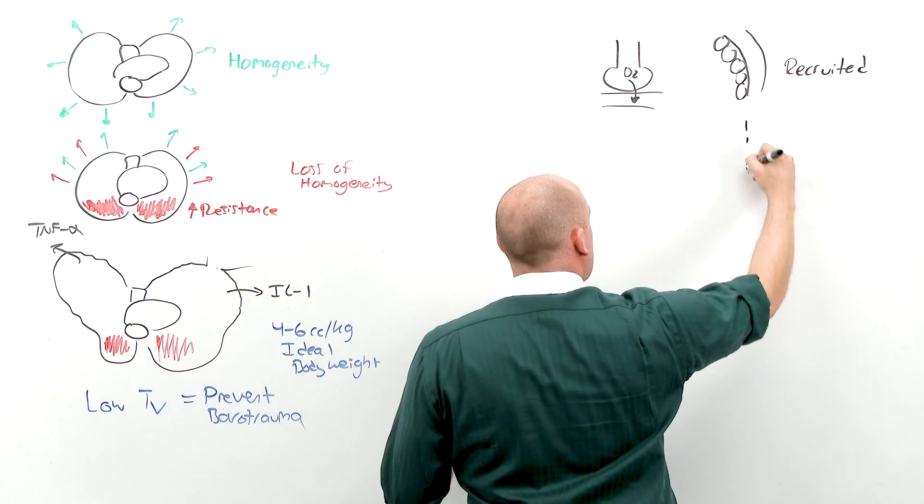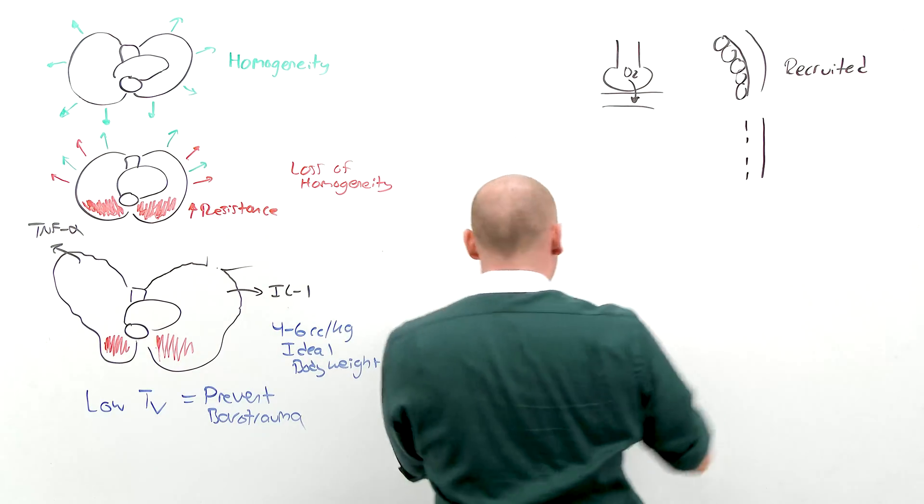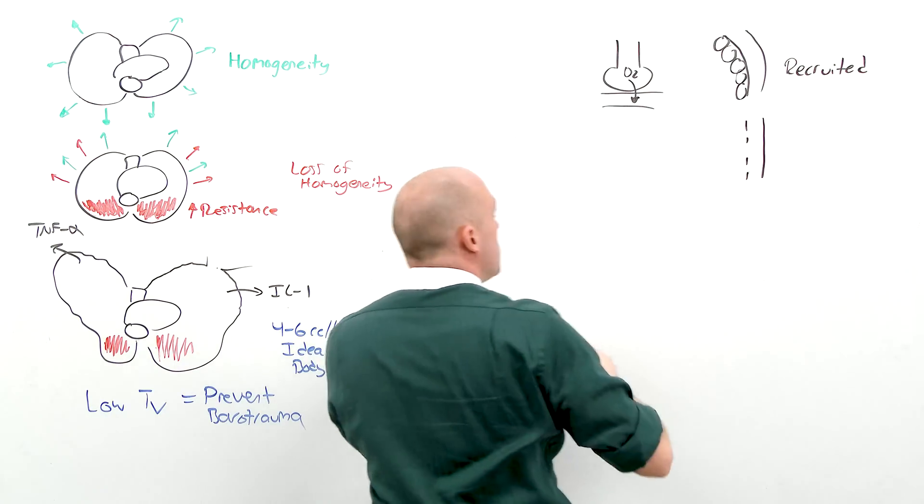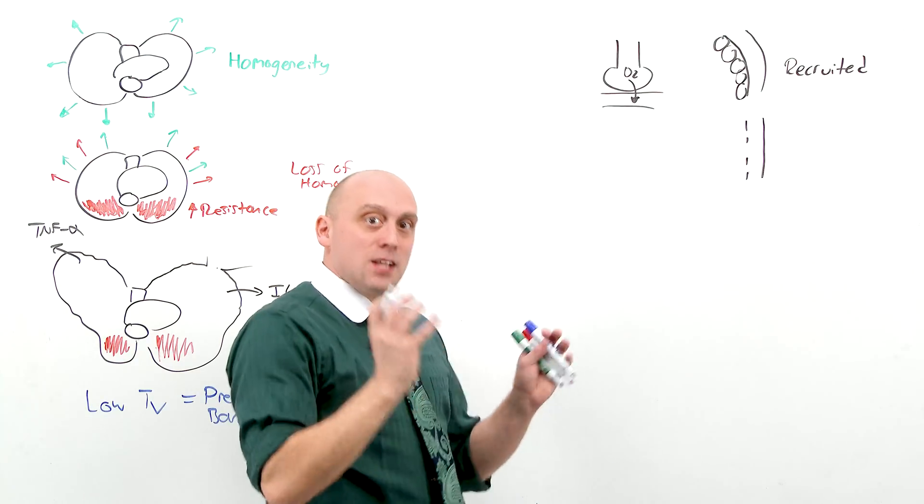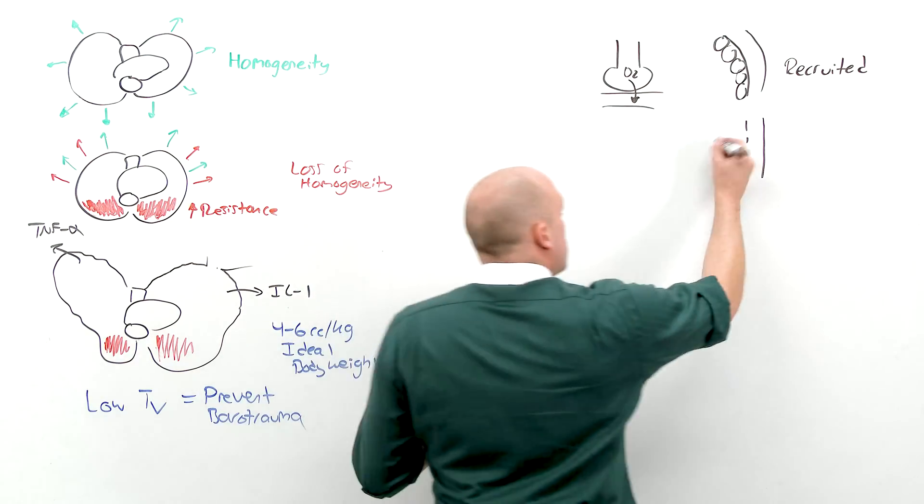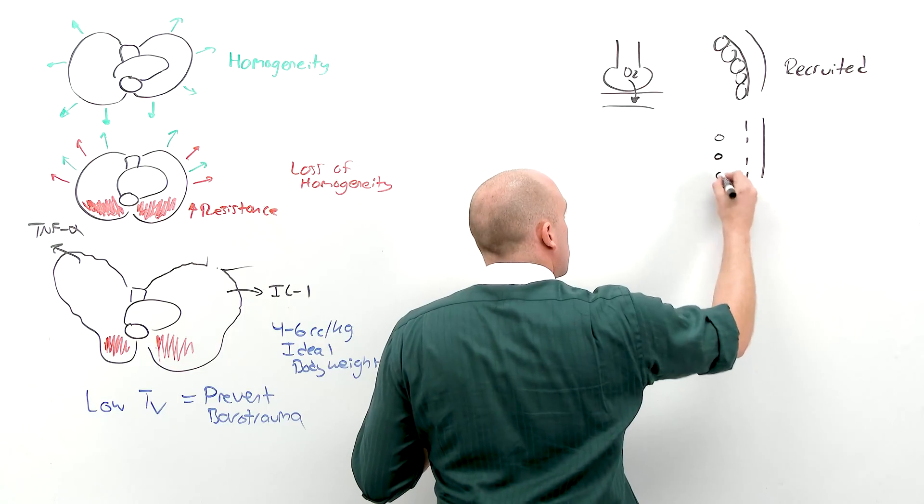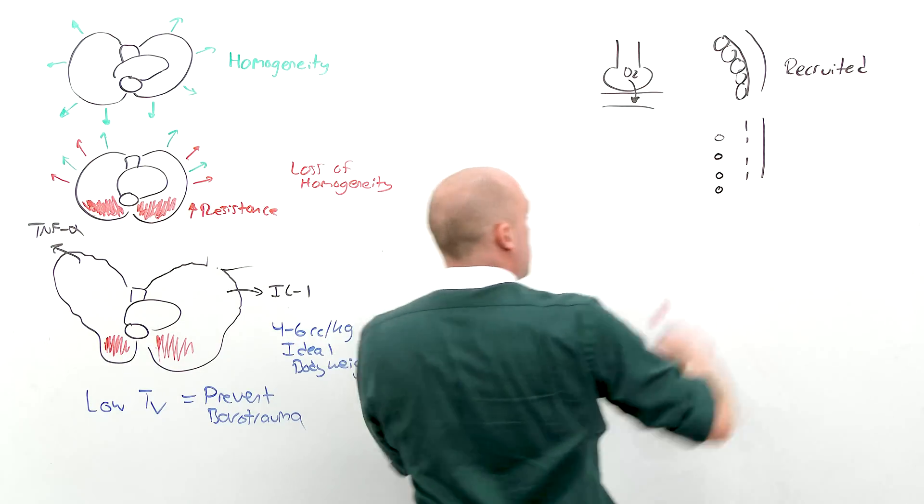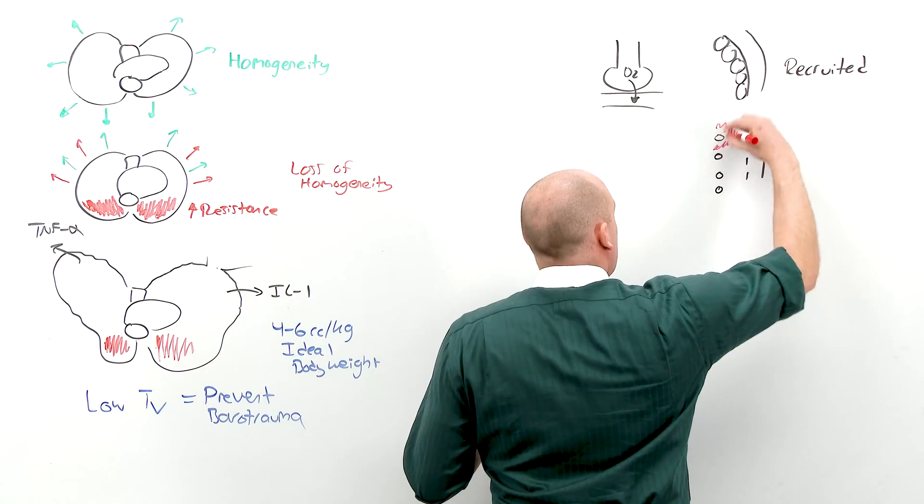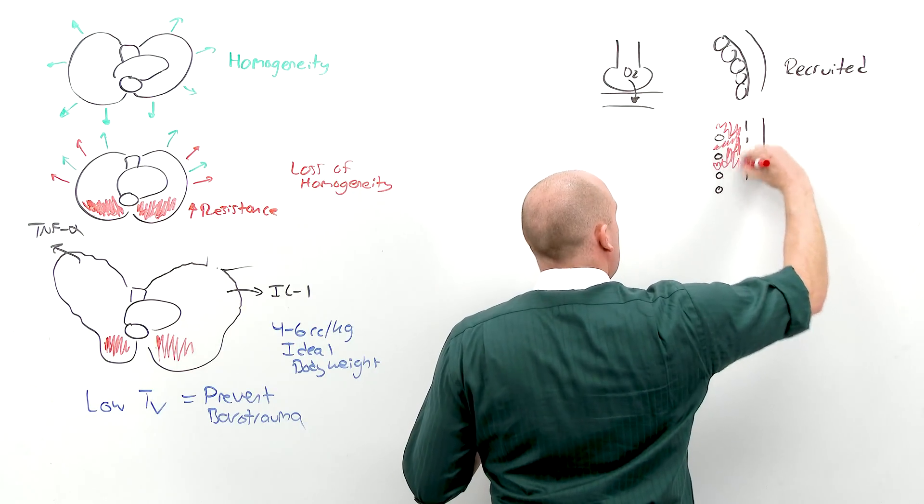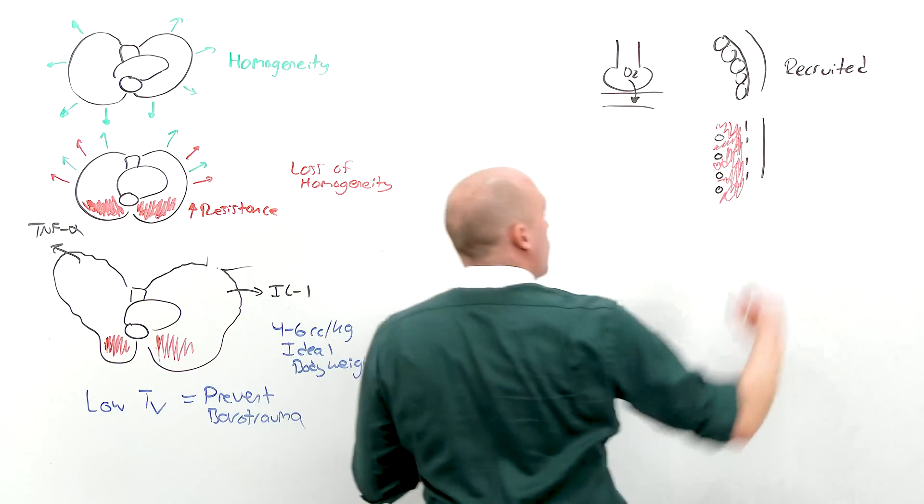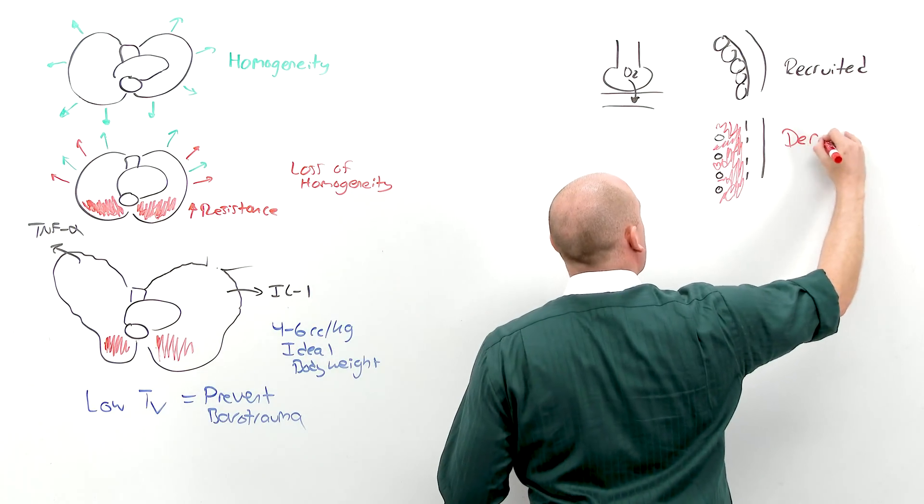When there's non-cardiogenic pulmonary edema, fluid leaks out. The real problem with this fluid, though, is that it collapses the alveoli. Tiny collapsed alveoli, surrounded by fluid, doesn't work very well. And that's called de-recruitment.